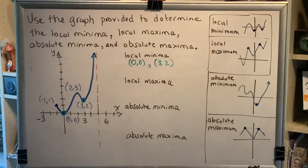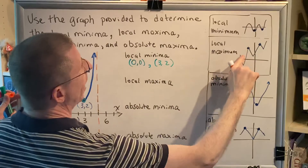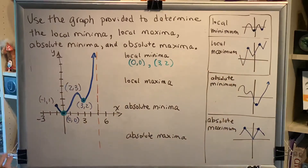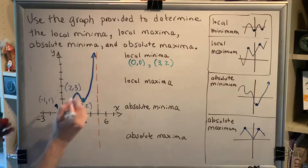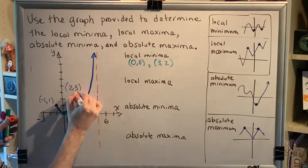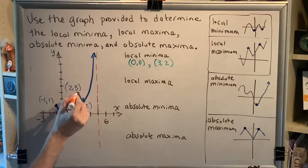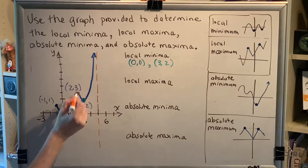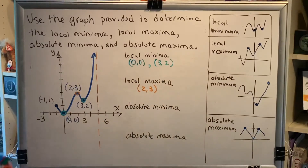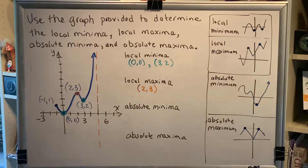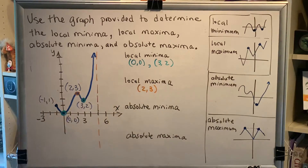Our next category is local maxima — a point at the top of the hill. How many of those points are there in this graph? Only one. This is the only point that is at the top of the hill — the highest of all nearby points with points to the left as well as to the right. So (2, 3) is the only local maximum. Sometimes students suggest that (−1, 1) is a local maximum. It is not — there are no points to the left of (−1, 1), and therefore it cannot be a local anything.